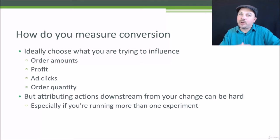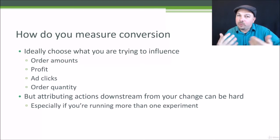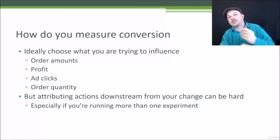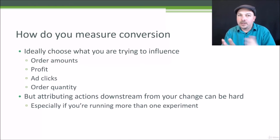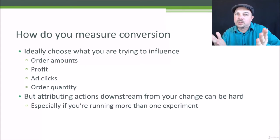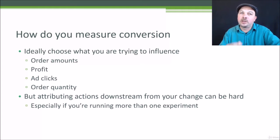Maybe you just care about driving ad clicks or order quantities to reduce variance. You can actually measure more than one thing at once — you don't have to pick just one. You can report on the effect of many different things: revenue, profit, clicks, ad views. If these things are all moving in the right direction together, that's a very strong sign that this change had a positive impact in more ways than one. Just make sure you know which metric matters the most and what your criteria for success will be ahead of time.